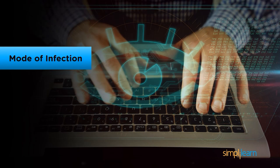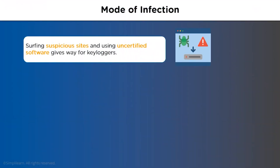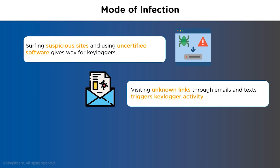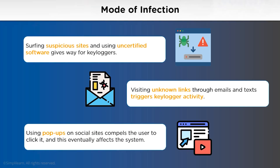Now let's look at how keyloggers enter into a system. Searching for a suitable driver can often lead to installation of a key logging program. Visiting suspicious sites and installing uncertified software are also common causes. Using unknown links or visiting unknown websites from unknown addresses can also be a reason. Lastly, pop-ups commonly seen on social media or different media sites can lead to installation of the key logging program into a system.